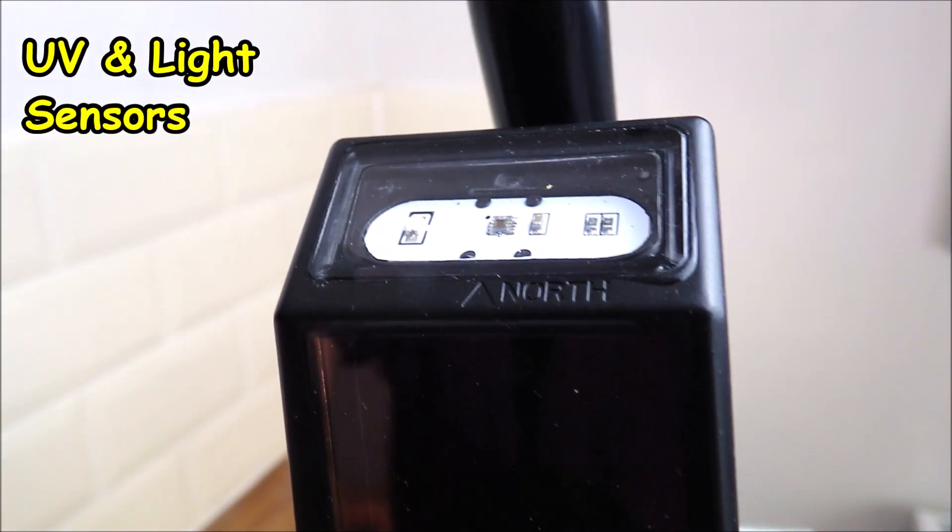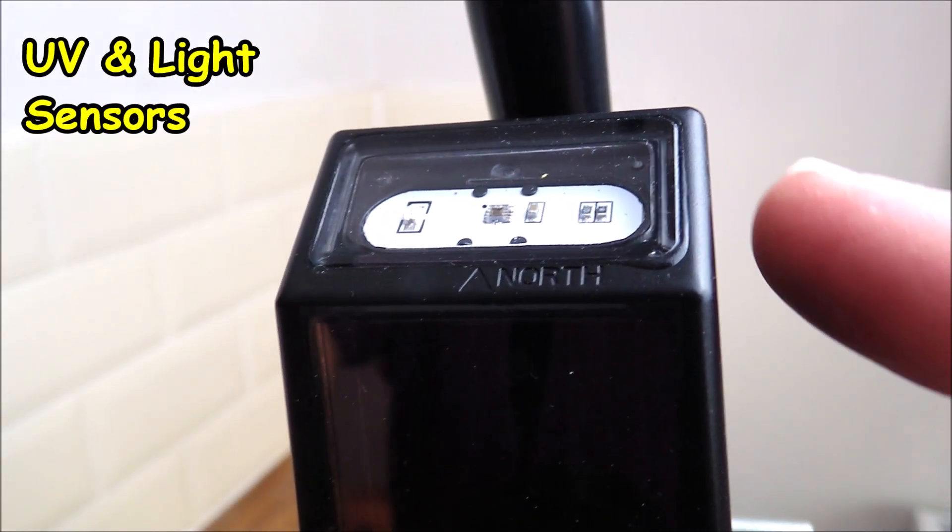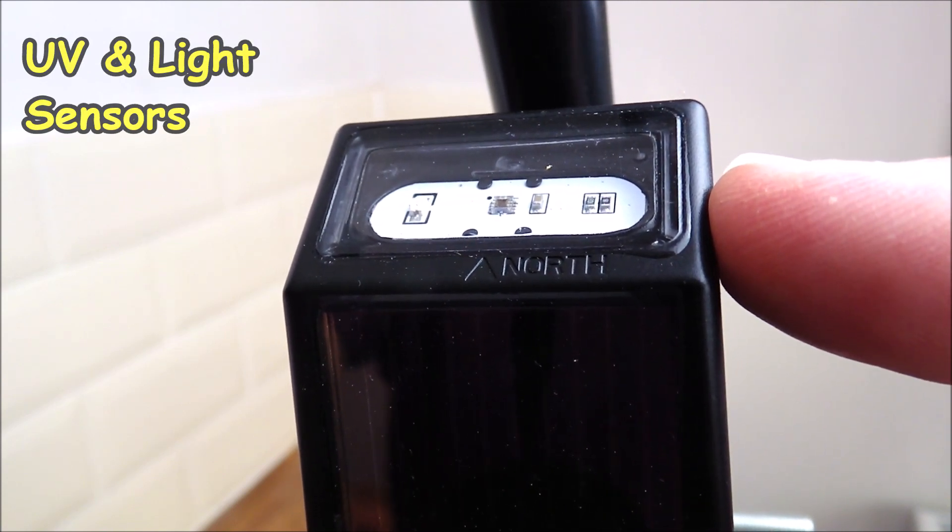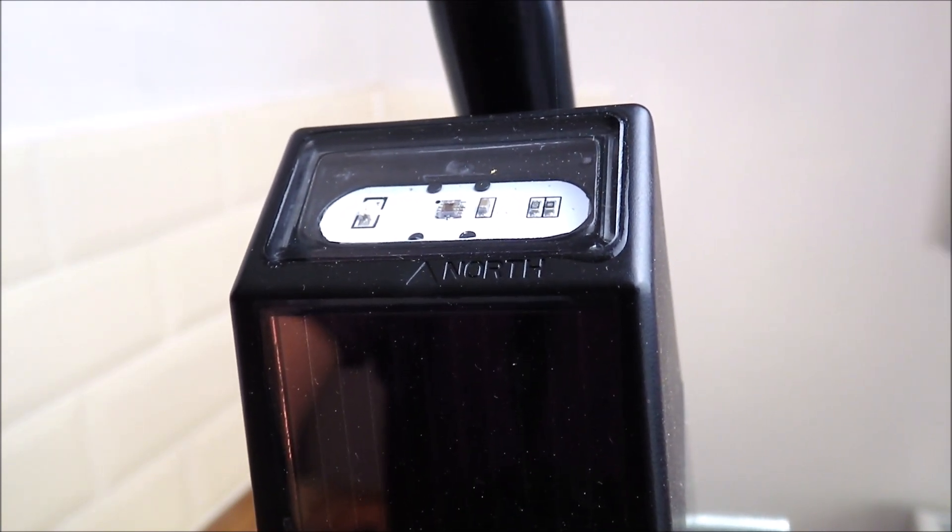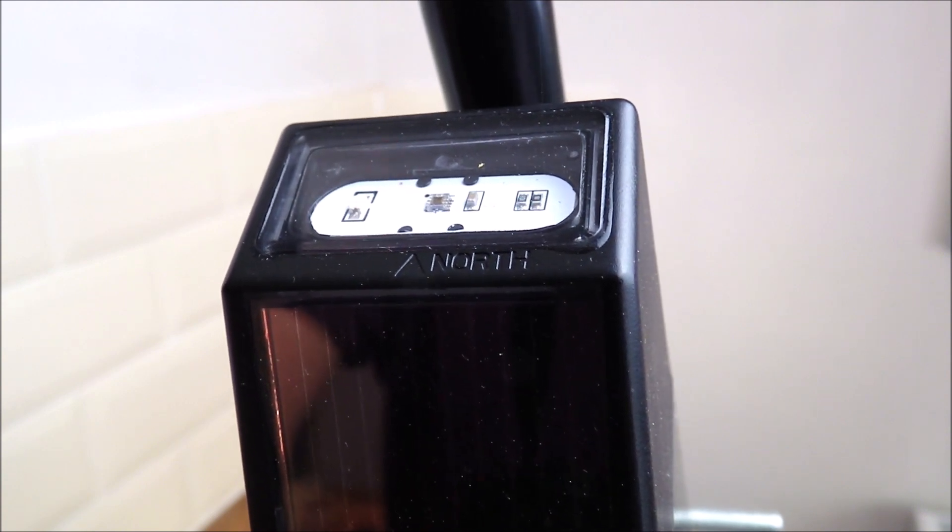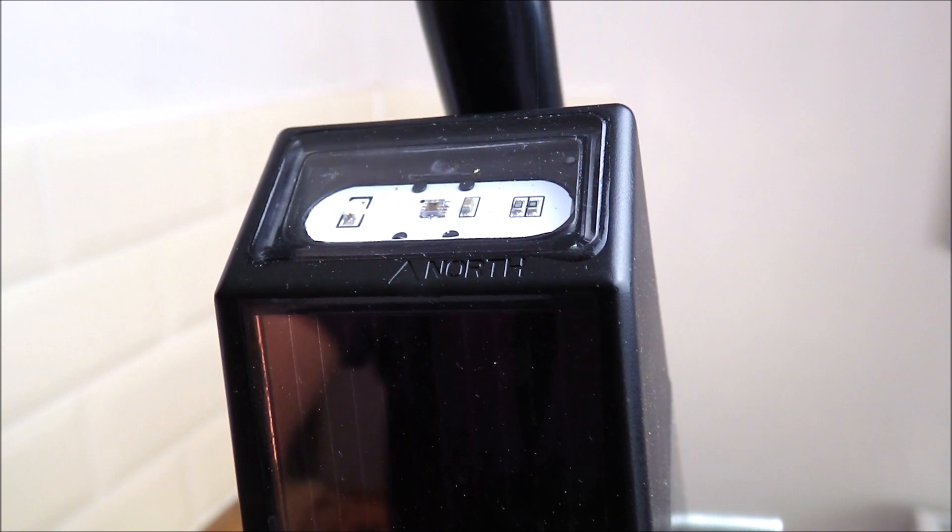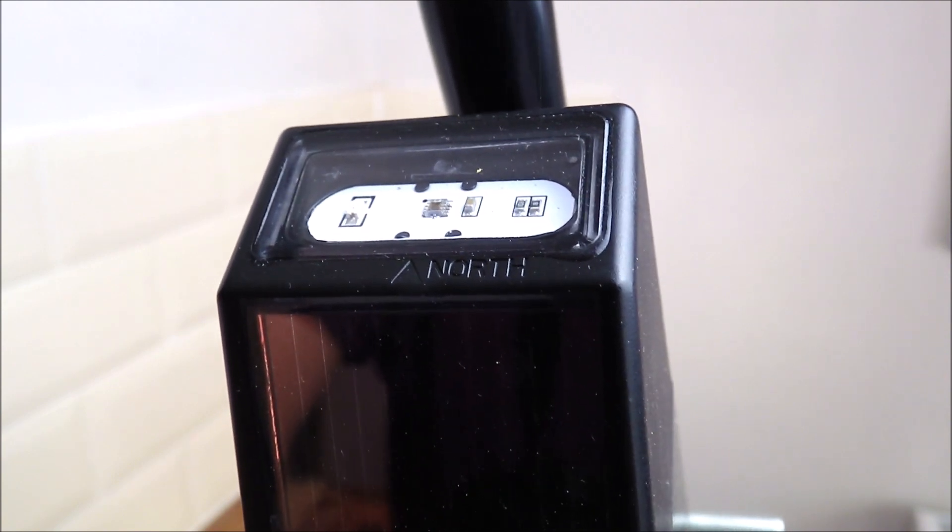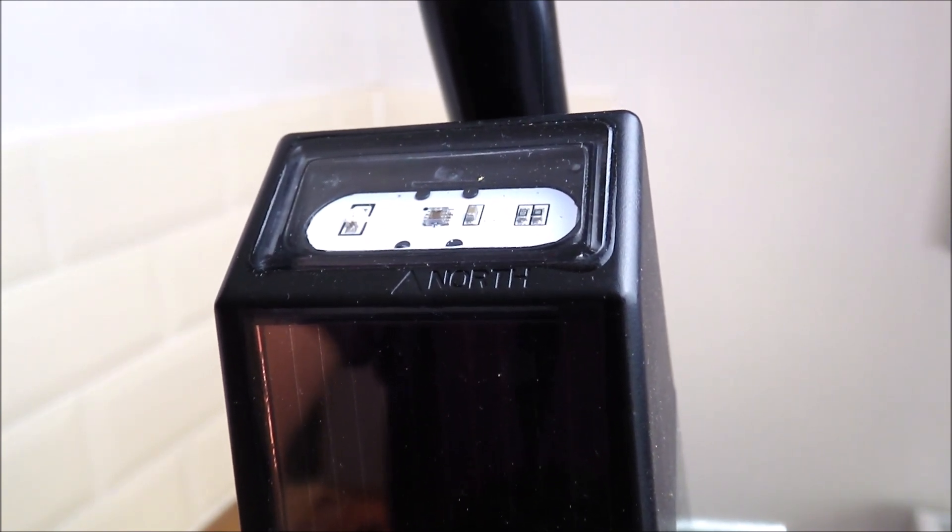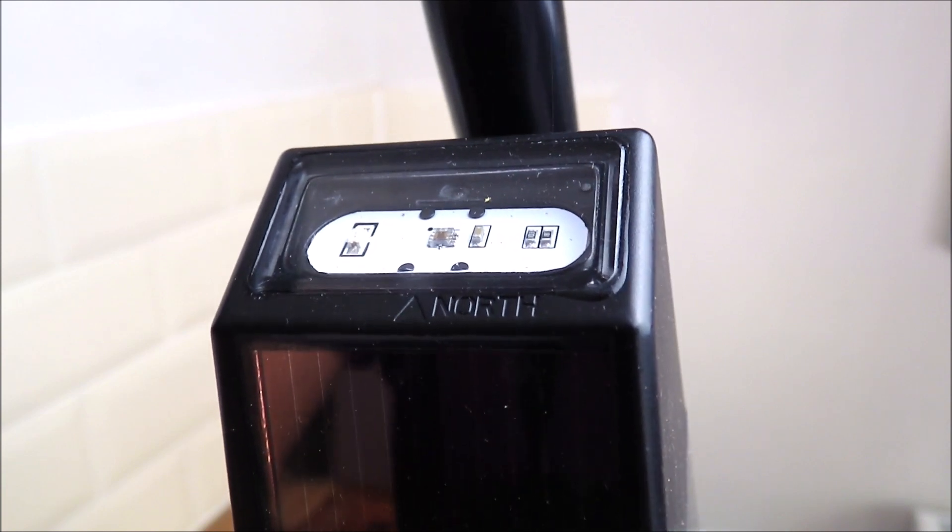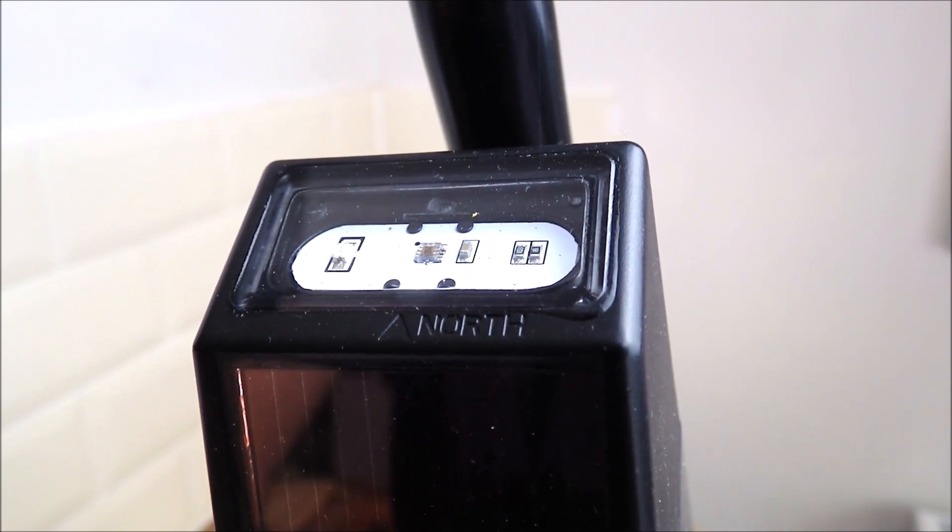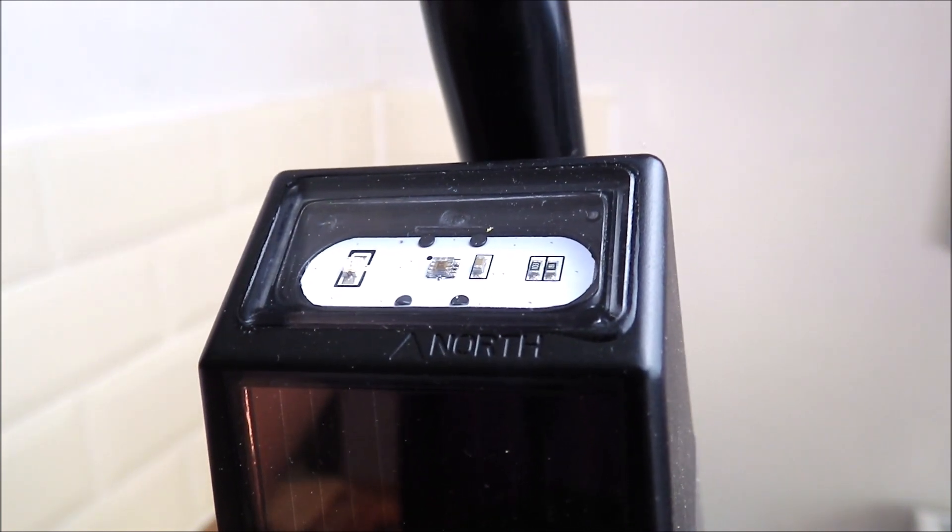If we take a look at the top part of this anemometer unit, you can see there are two other sensors integrated. First, we have a UV sensor with a UV index range of between zero to 15.